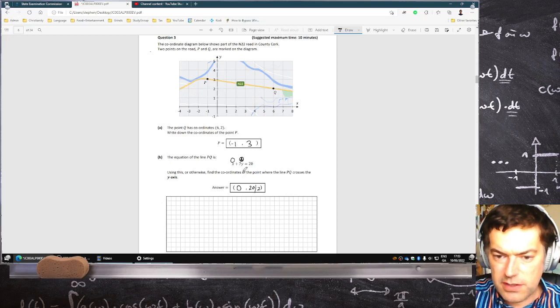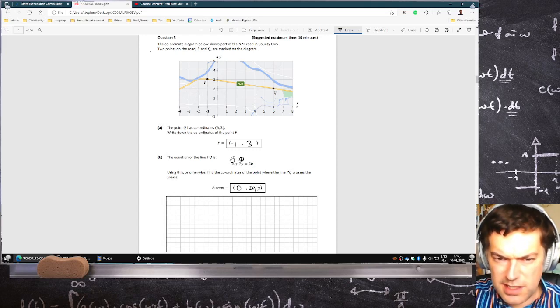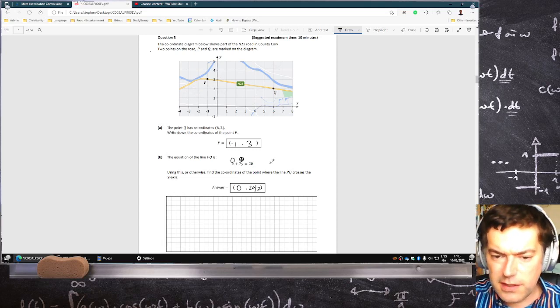Use this or otherwise find the coordinate of the point where the line PQ, that's its equation, crosses the Y axis. So you make X is 0, 2.8. Yeah, that does look like about 2.8 there.